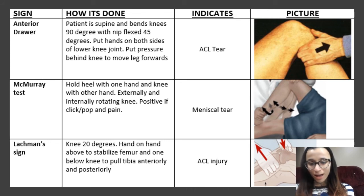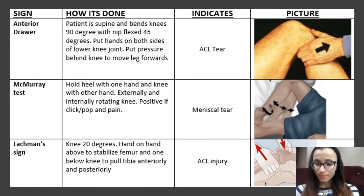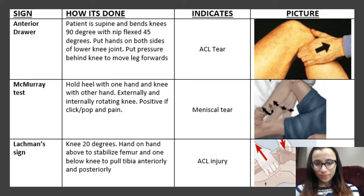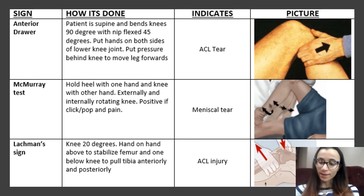The next one is the Lachman sign. The knee is going to be at 20 degrees. You're going to put a hand above the knee to stabilize the femur and one hand below the knee, and you're going to pull anterior and posterior. This is going to be ACL injury. A way I like to remember all the musculoskeletal ones is LAM: L for Lachman, A for anterior drawer, M for McMurray. The hint is that with sports everyone seems tough, but really they're soft like a lamb.